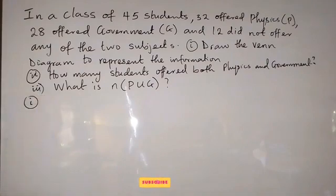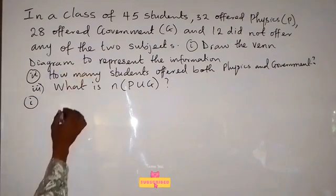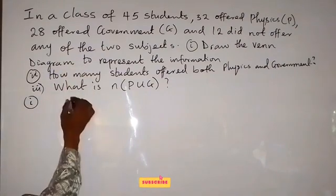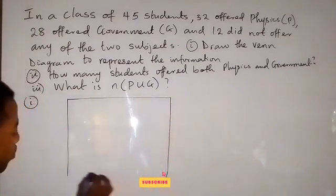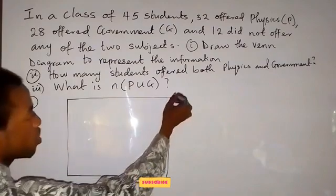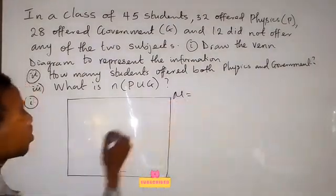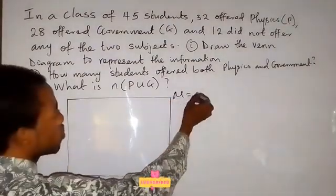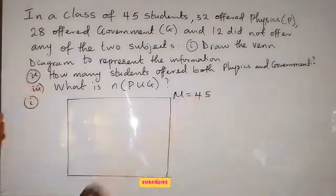Now, this is a set problem and a Venn diagram will be used. We have a square or rectangle here. Then we call this a universe set. And the universe set here is 45 because we are working with a class of 45 students, so the total number of people we are dealing with are 45, that's the universe set.